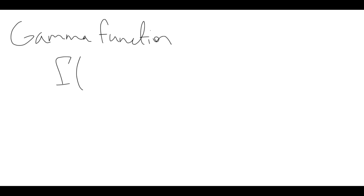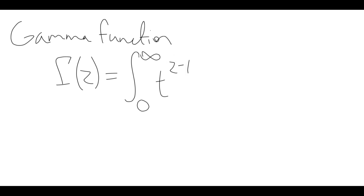In this video, we're going to be talking about the gamma function, which is an extension of the factorial to any complex number — well, almost any complex number — and it's defined to be the integral from 0 to infinity of t to the z minus 1, e to the minus t, dt.